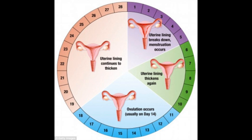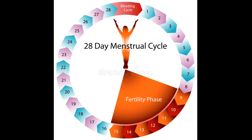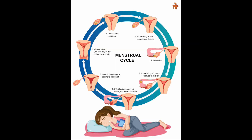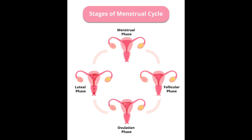Number 3: ovulation. Ovulation is when a mature egg is released from an ovary and moves along a fallopian tube to the uterus. This usually happens once each month, about 2 weeks before the next period. Ovulation can last from 16 to 32 hours. It is possible to get pregnant in the 5 days before ovulation and on the day of ovulation, but it is more likely in the 3 days leading up to and including ovulation.